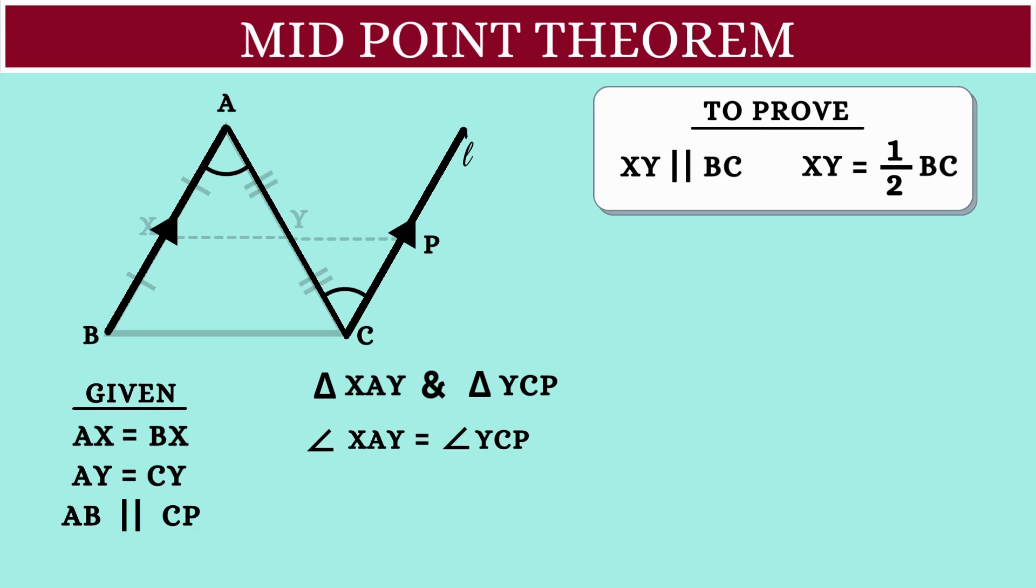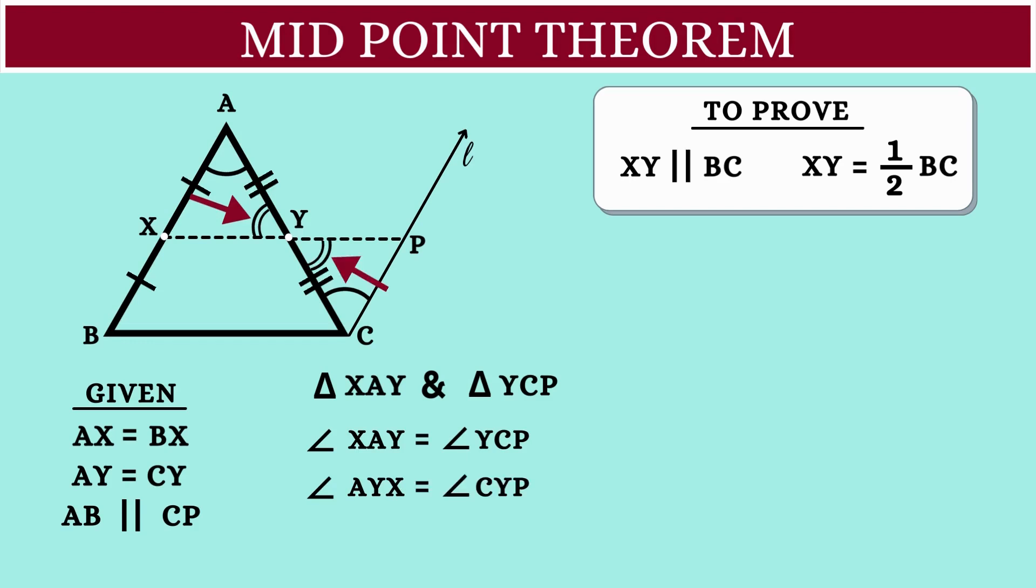Next, we have angle AYX is equal to angle CYP. These two are the vertically opposite angles. We also have AY is equal to YC, which is already given.